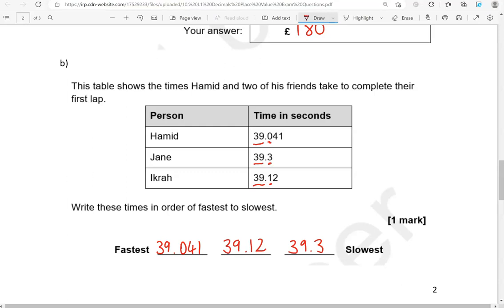It doesn't matter what digits they have after these because they have a lesser value than the digit that comes right after the decimal point.